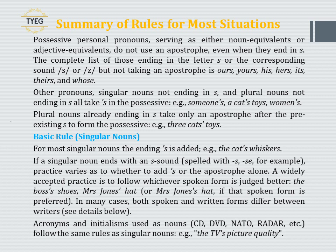Basic rule for singular nouns: for most singular nouns the ending 's is added — for example, 'the cat's whiskers'. If a singular noun ends with an S sound, practice varies as to whether to add apostrophe-S or the apostrophe alone. A widely accepted practice is to follow whichever spoken form is judged better: 'the boss's shoes', 'Mrs. Jones' hat', or 'Mrs. Jones's hat', if that spoken form is preferred. In many cases, both spoken and written forms differ between writers.